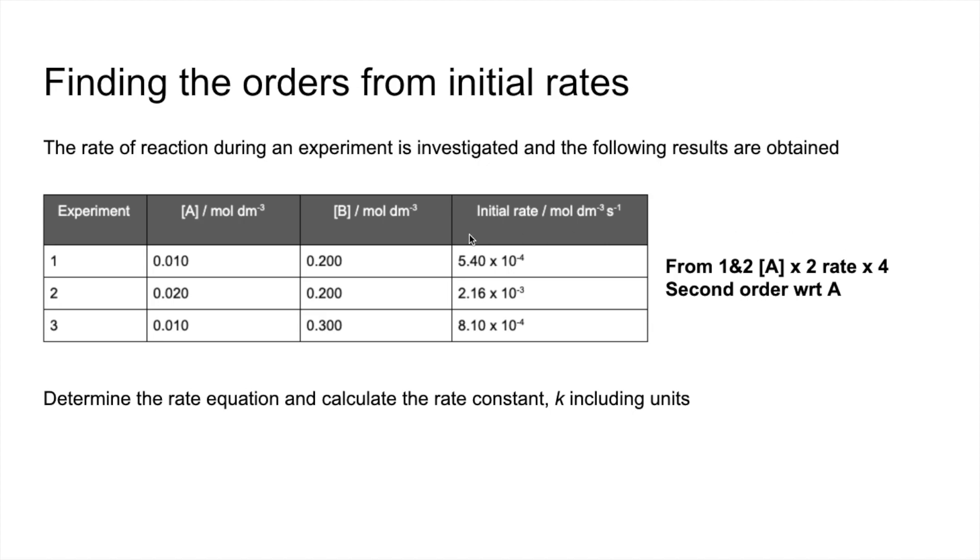So for B now, we're looking for two experiments where A is constant. You can see in 1 and 3, it's kept at 0.01. So what's happening to B, it's gone up by a factor of 1.5.